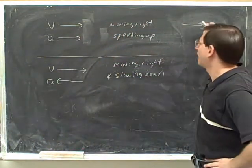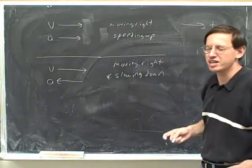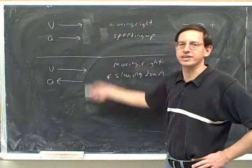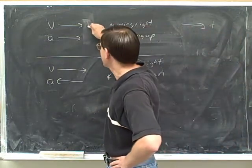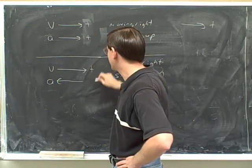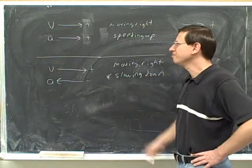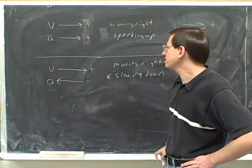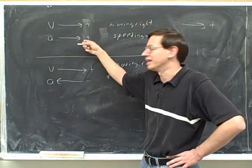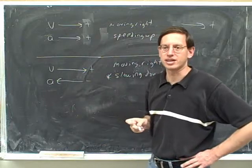We'd probably be better off choosing the direction of motion as our positive direction. Since we're moving to the right, choose right as positive: velocity is to the right so it's positive, acceleration is to the right so it's positive. In the slowing-down case: velocity is to the right so it's positive, acceleration is to the left so it's negative. When speeding up, velocity and acceleration have the same sign; when slowing down, they have opposite signs.